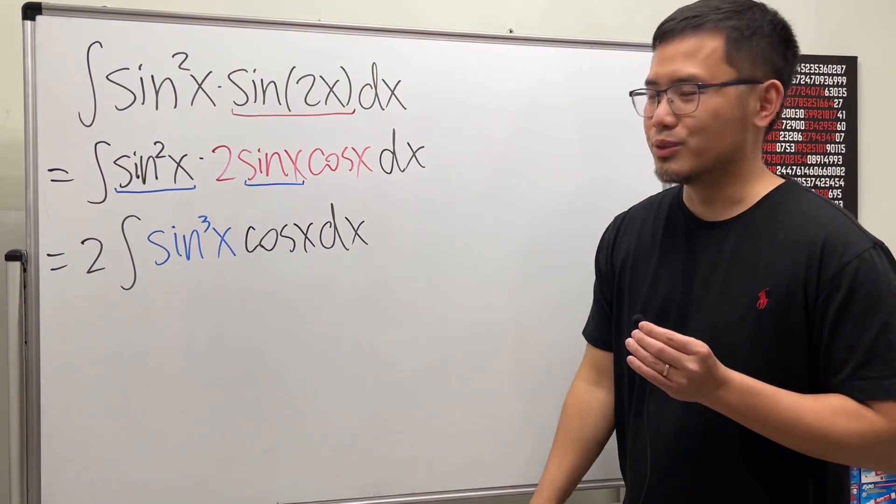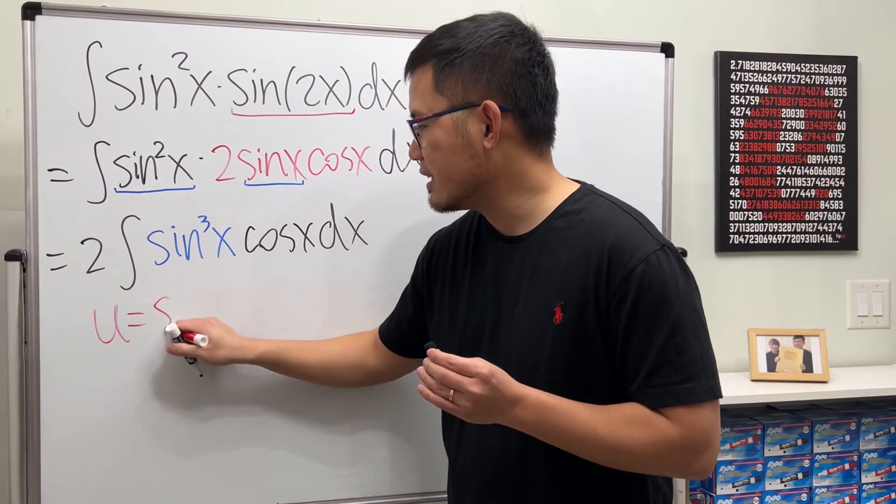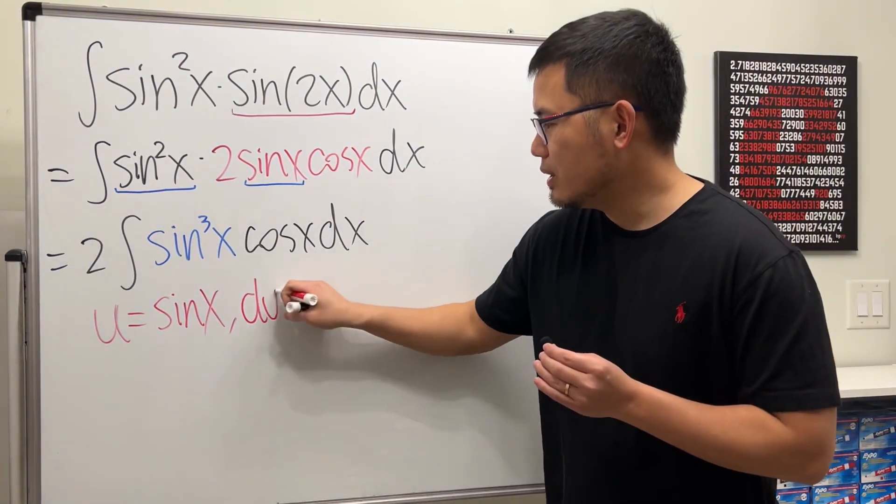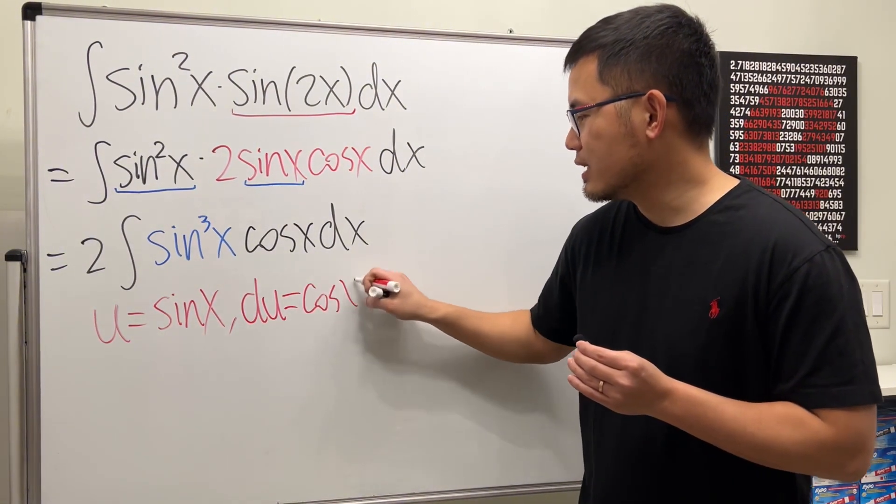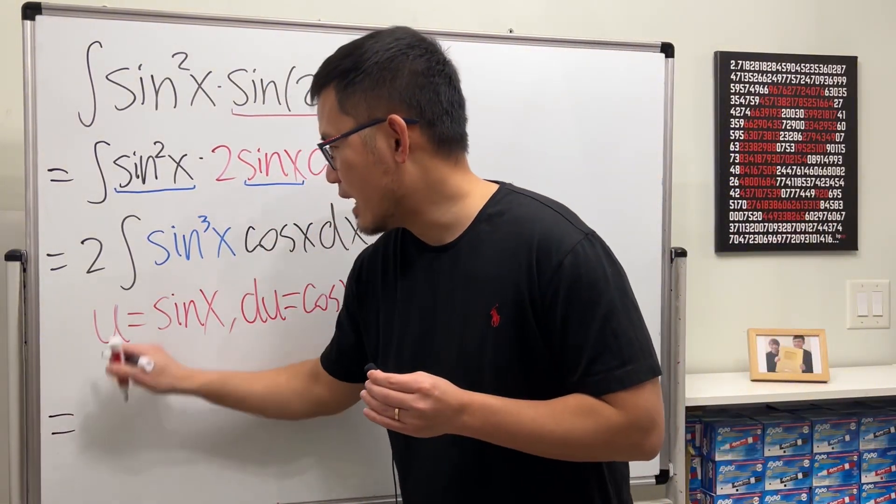So right here we can just use a u-sub. Let's go ahead and put u equal to sine x, because this way du is very nicely equal to cosine x dx.